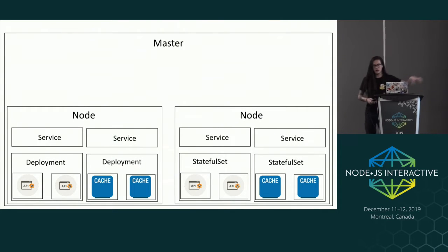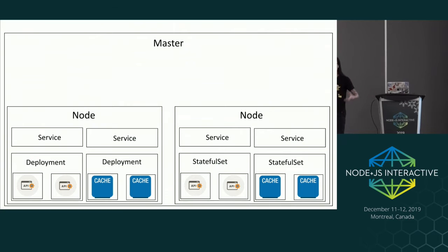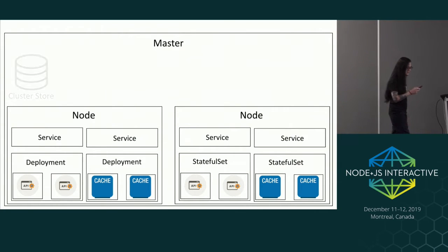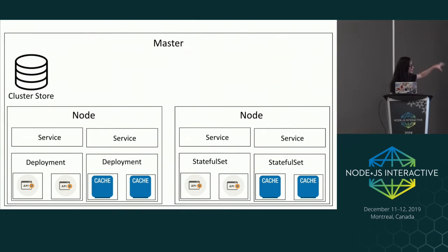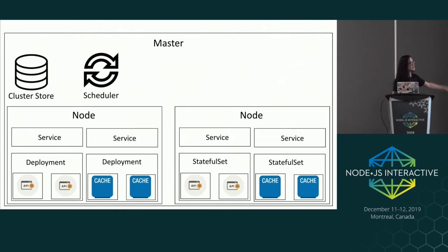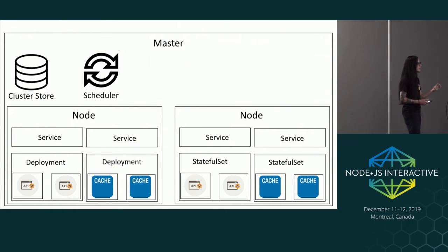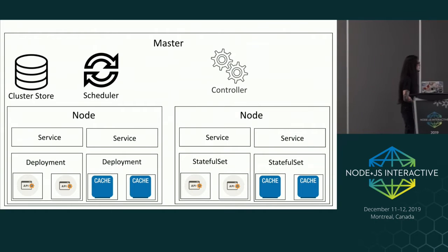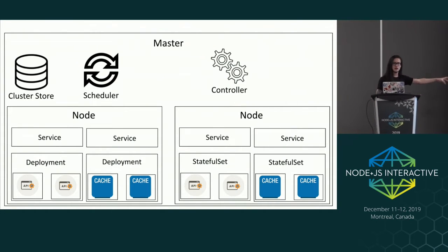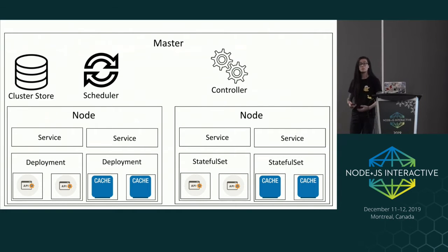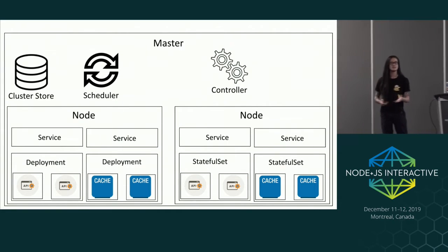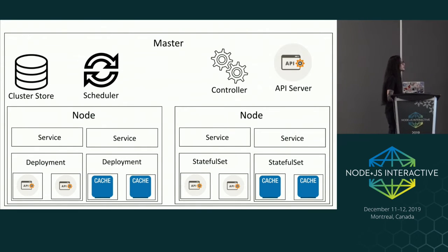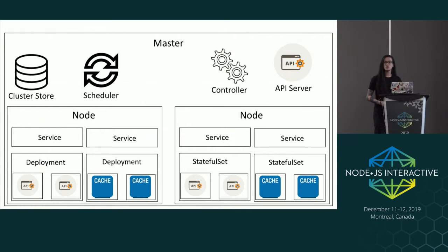We have nodes — all VMs connected — and we have the master. The master makes decisions about your cluster. We have the cluster store, which manages and stores all information about the cluster. We have the scheduler — when there's a new pod, it decides which node to send it to. We have a few controllers: node controllers to know if a node is safe, and replication controllers to check that the correct number of instances is running. And we have the API server, used as a front-end to perform operations on the control plane of the whole Kubernetes.